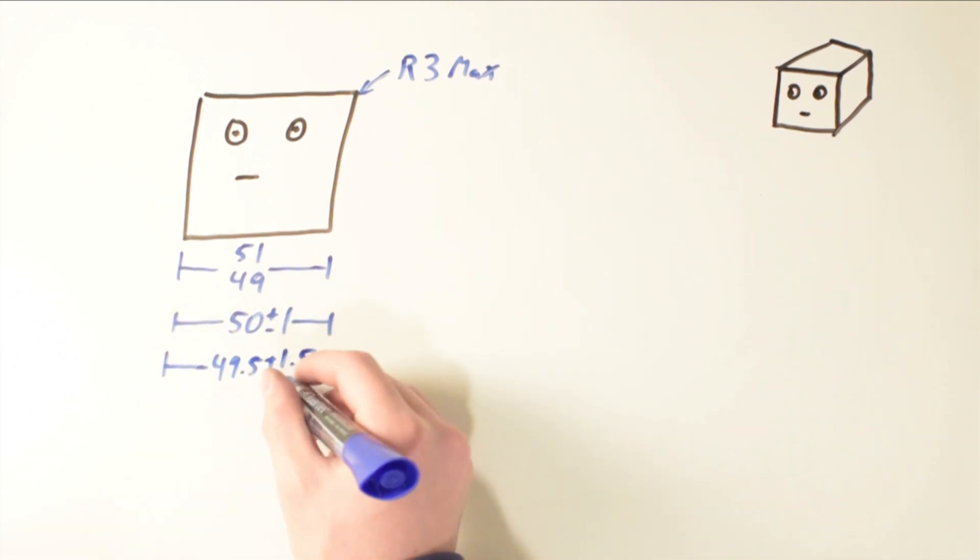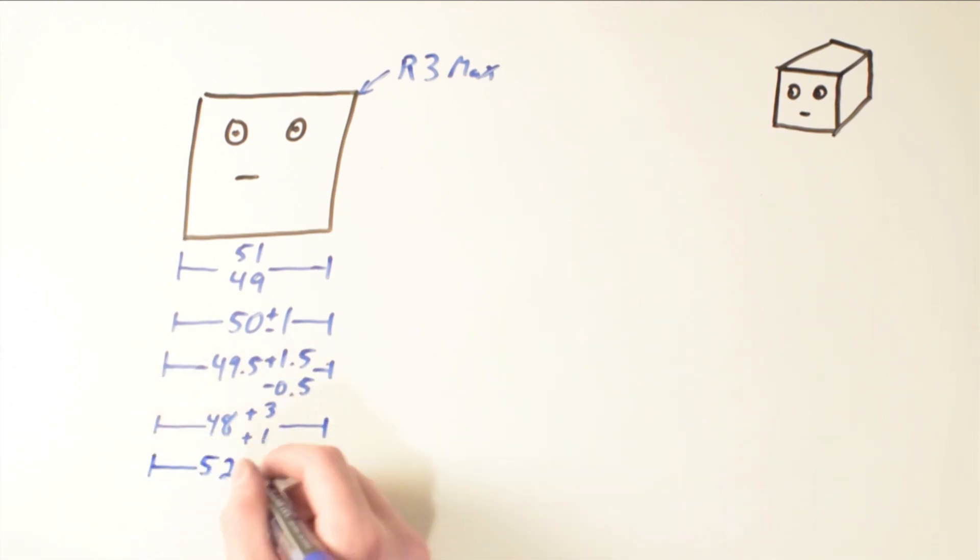Bilateral tolerancing is when a tolerance band is not evenly distributed on either side of a nominal size. In this case we can have plus minus, plus plus, or minus minus. A related form of this is unilateral tolerancing, which is when either the upper or the lower tolerance is zero.